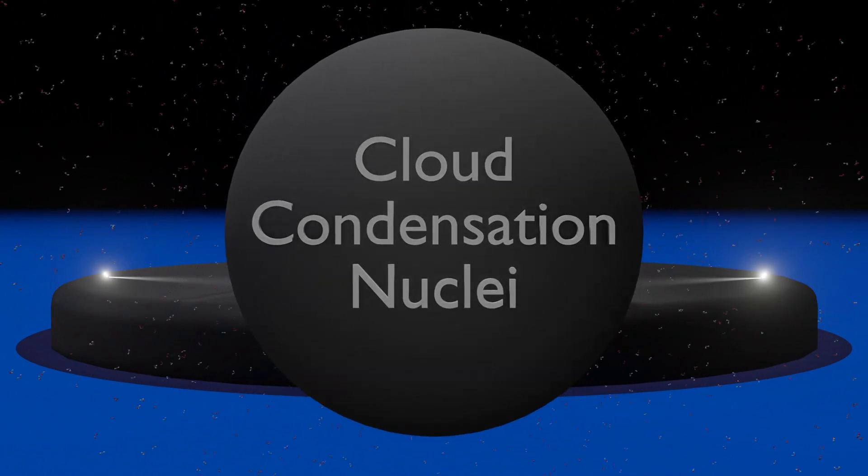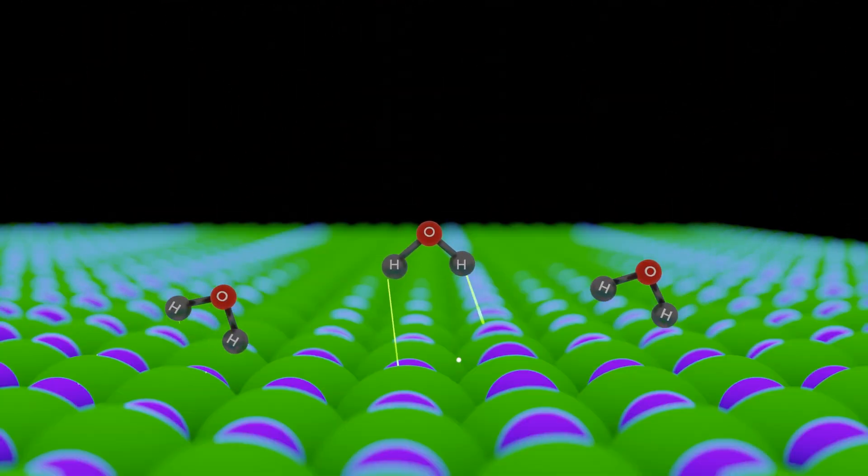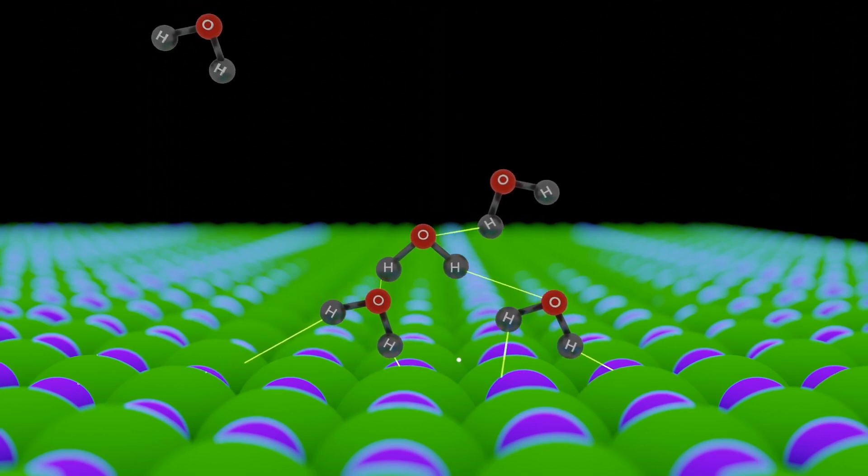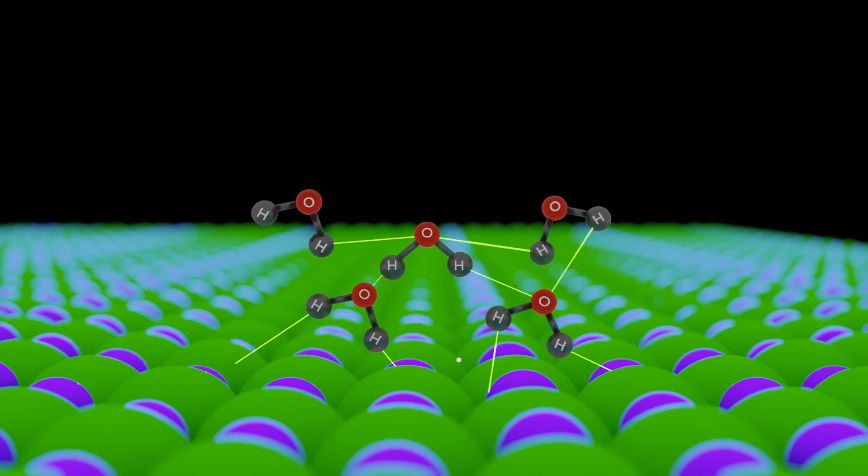These relatively large particulates, known as cloud condensation nuclei, start the droplet at roughly 1,000 times the size. This lowers the angle between molecules on the perimeter, and allows adjacent molecules to have other molecules to hold onto. This allows the droplet to grow.